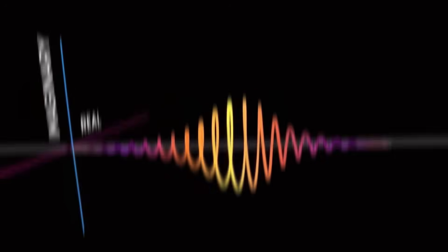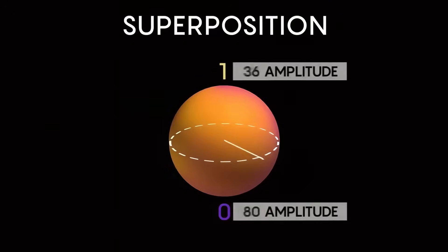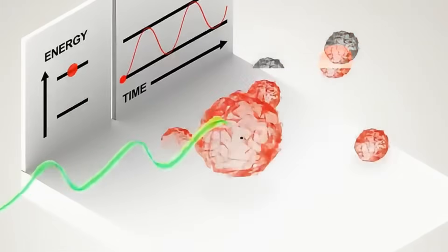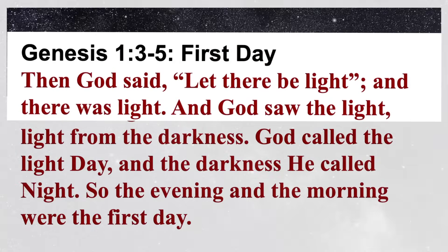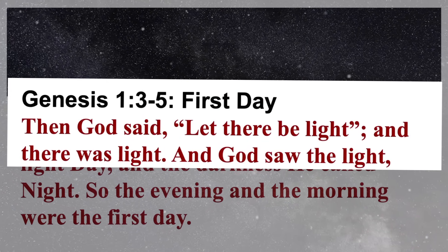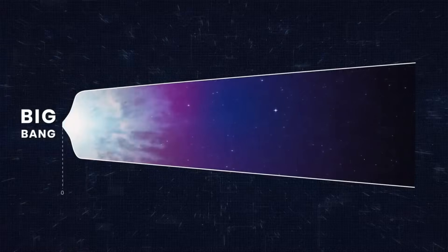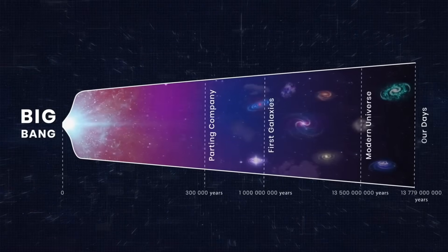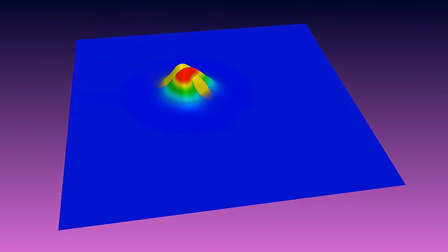In modern physics, information theory reveals that the universe at its core is informational. Quantum information theory treats quantum states as qubits, units of quantum information that encode probabilities. Entropy, the measure of information, underlies thermodynamics. Black hole thermodynamics, for instance, ties entropy to the event horizon surface area. The holographic principle suggests our three-dimensional reality emerges from information encoded on a two-dimensional boundary. Information, not matter, may be the fundamental currency of existence.